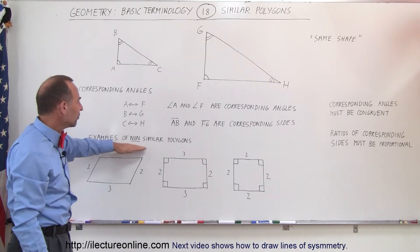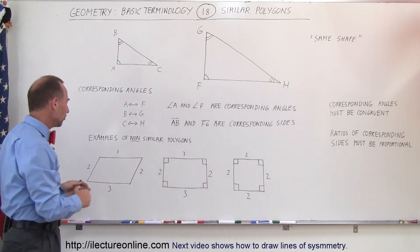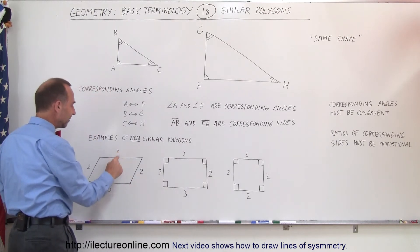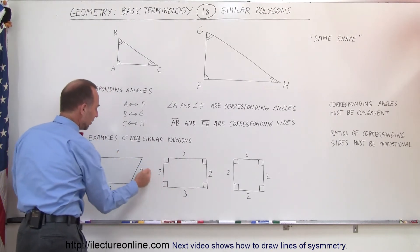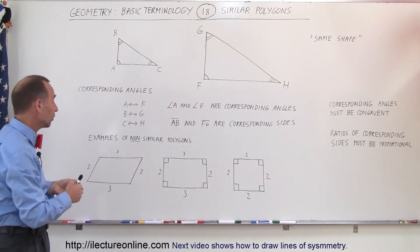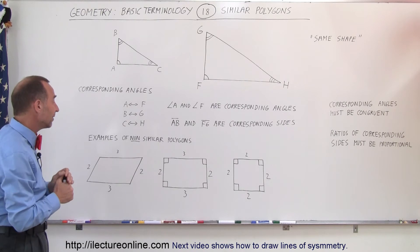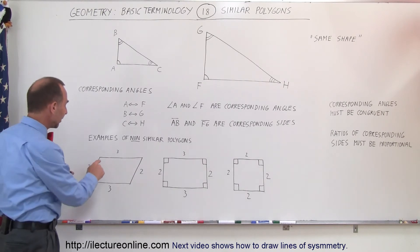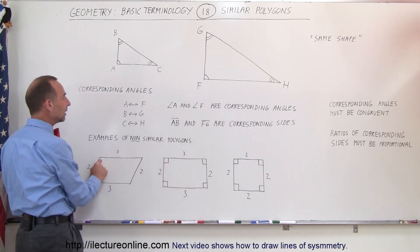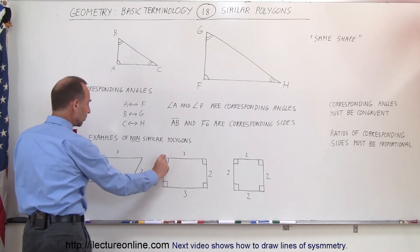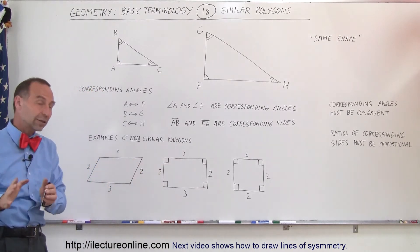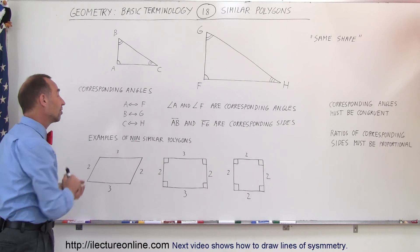Here are some examples of non-similar polygons. Notice we have a parallelogram and a rectangle. The sides of the parallelogram have length 3 and the sides of the rectangle have length 2. Are those similar shapes? They are non-similar polygons. The reason is that the corresponding angles are not congruent: this angle is greater than 90 degrees, while this angle is equal to 90 degrees. These are the corresponding angles because they're both in the top left corner of the figure. Since they're not congruent, we have non-similar polygons.